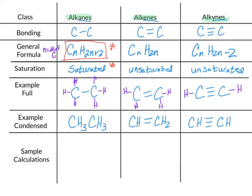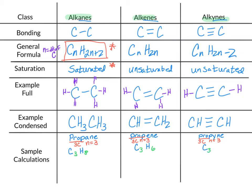Let's start with propane. 'Prop' in the name propane tells us there are three carbons, so n equals 3. Our formula will be C₃H₂ˣ³⁺², which is C₃H₈. In propene, again we have three carbons and n equals 3, giving us C₃H₆. And finally, in the alkyne propyne, we will have C₃H₄.